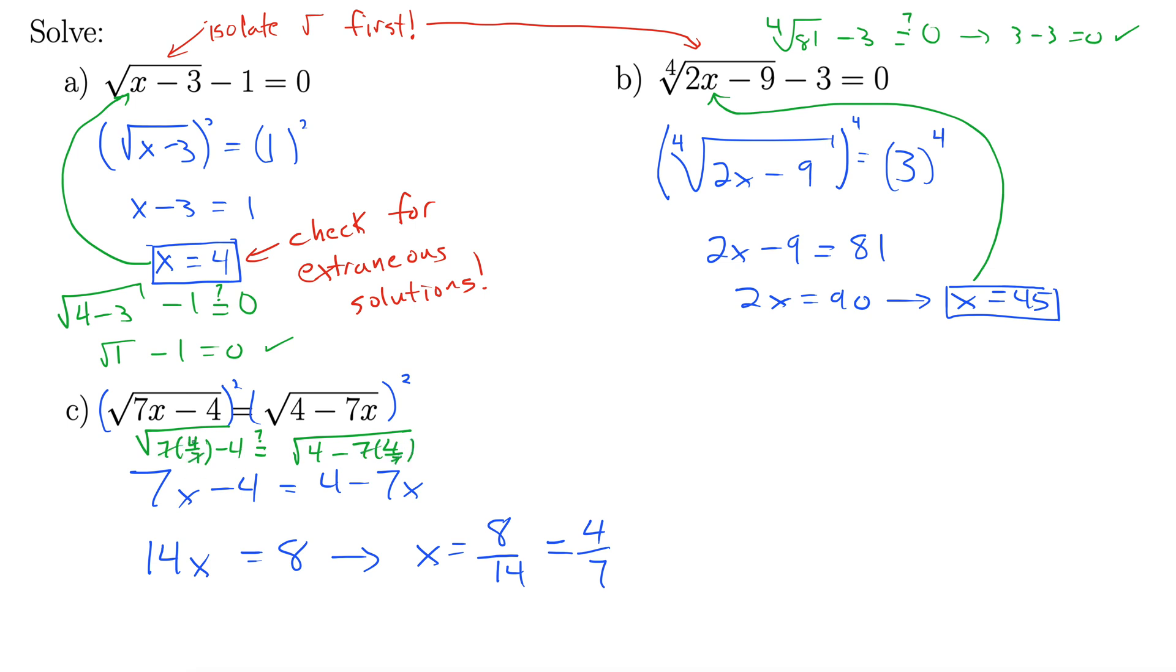Let's see the 7ths cancel out. 7ths cancel out. That leaves us with 4 minus 4 equals 4 minus 4. 0 equals 0. Yes indeed, that's true. So our answer here, 4 sevenths.